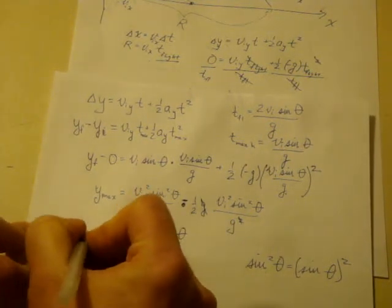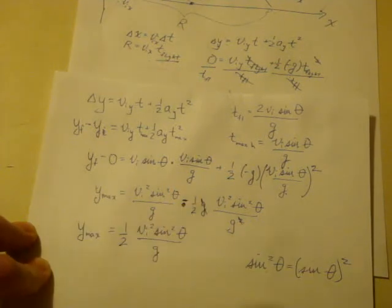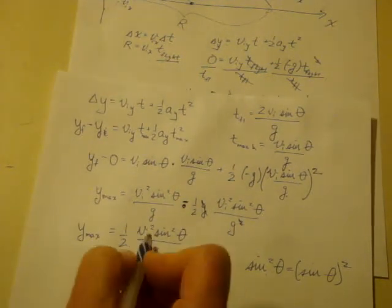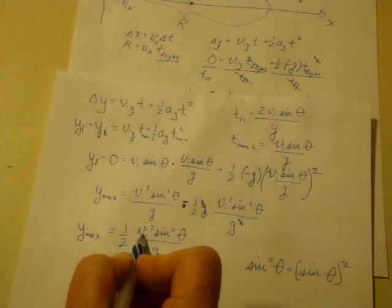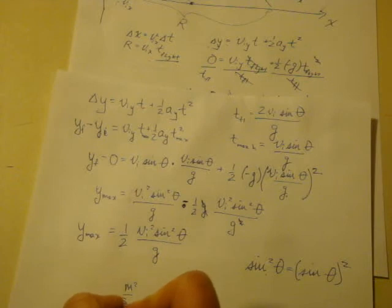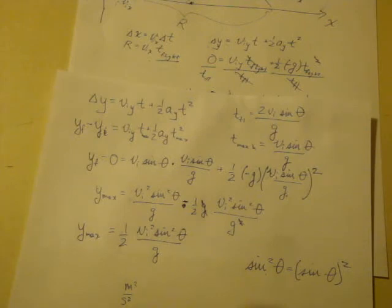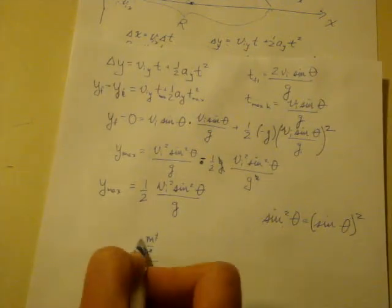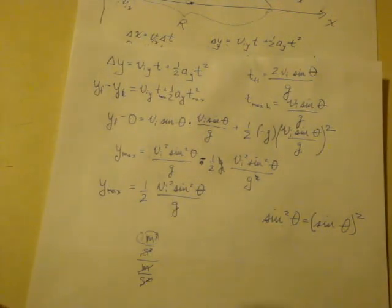And we can even check out our units a little bit. What are the units for the velocity? They're meters per second. We're going to square those, so that would give us meters squared per second squared, and we divide that by gravity, which is meters per second squared. Our seconds squareds cancel out. This meter cancels one of those meters, and we end up with just a meter, which is what we'd expect for a position.